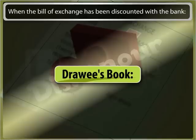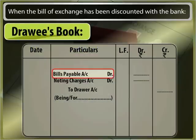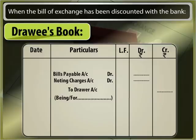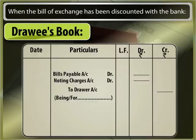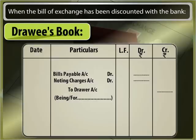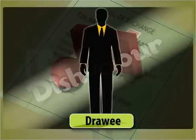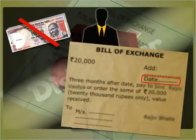In the drawee's book: Bills payable account is debited with the full amount of the bill and noting charges, to drawer account.